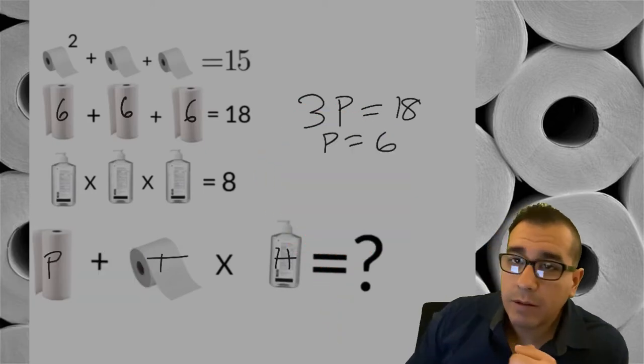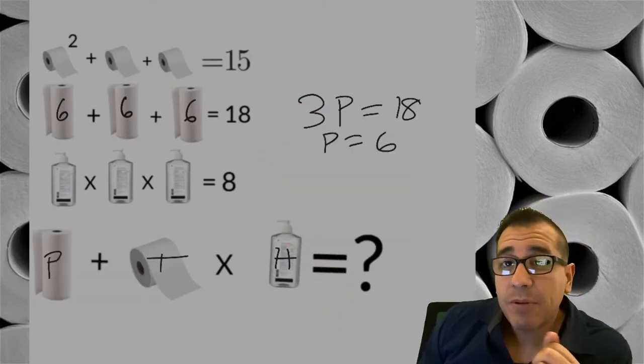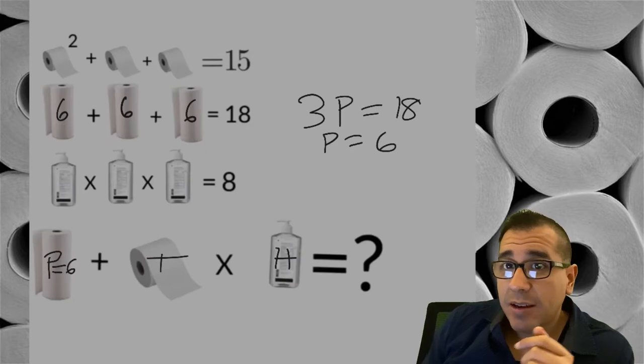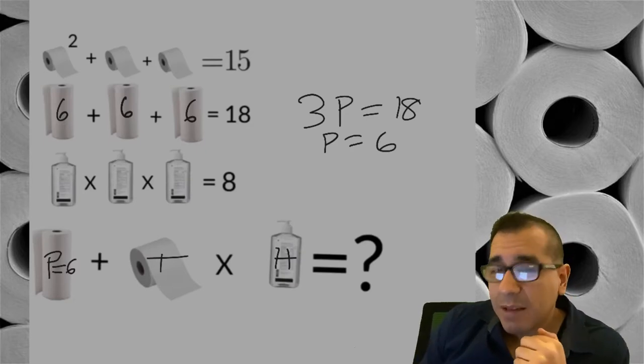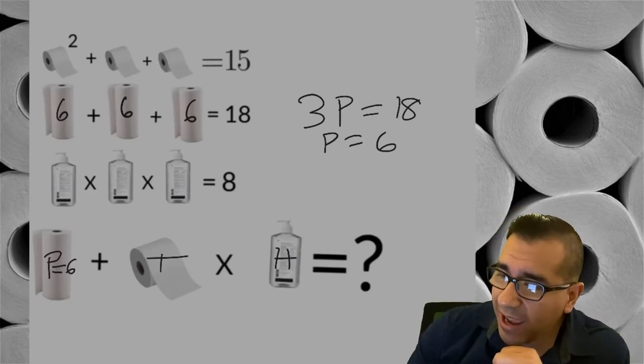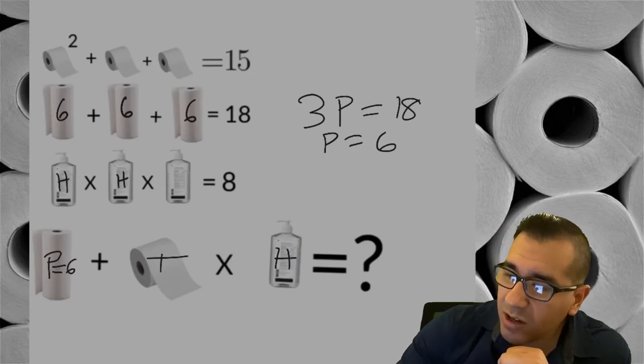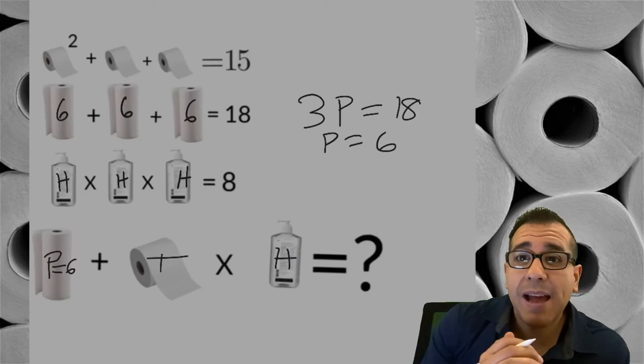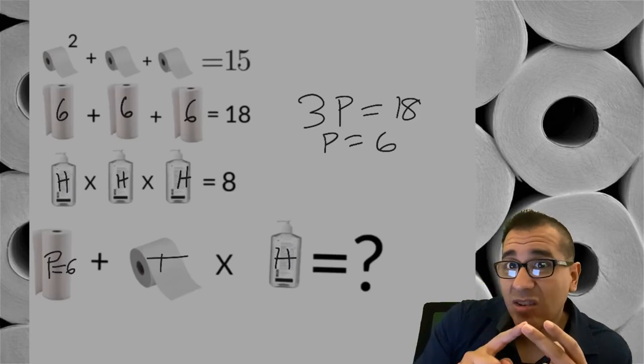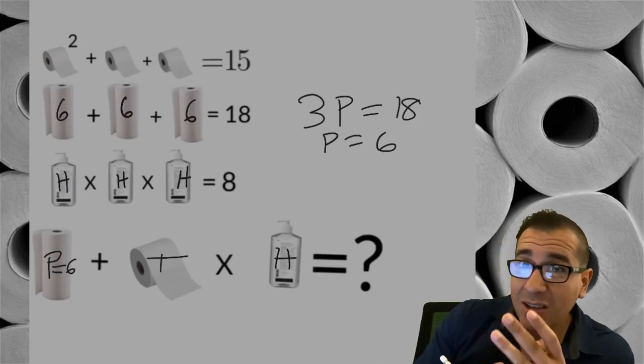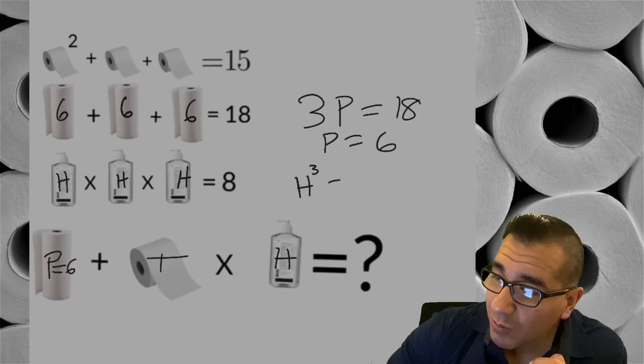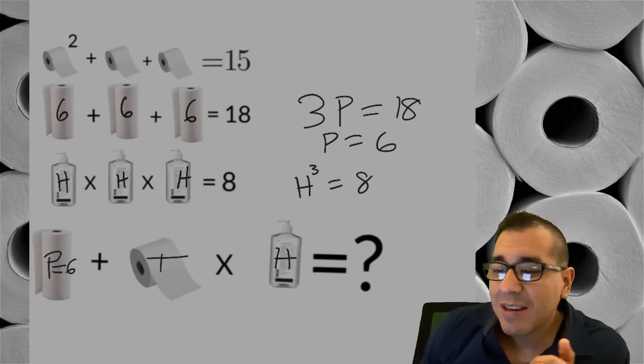Each paper towel is worth six. Alright, hand sanitizer - I'm gonna continue with equation three. I've been looking at the comments and people have been getting down with their skills, some creativity, I love it. So each hand sanitizer bottle like we said is H, but look what's happening this time - we're multiplying. So H times H - we're not adding - is H squared, right, H to the second power. But then we're multiplying by another H, so here you have H times H times H, so we have H cubed equals eight. So basically we're saying what number times itself three times gives you eight? Well two times two times two.